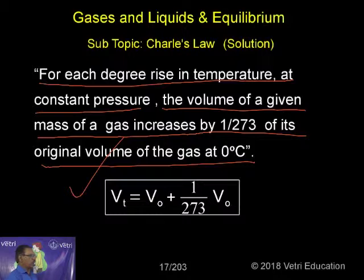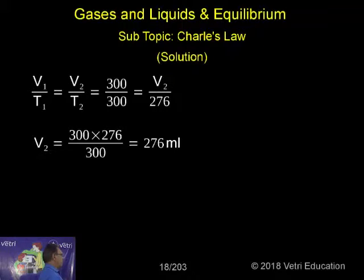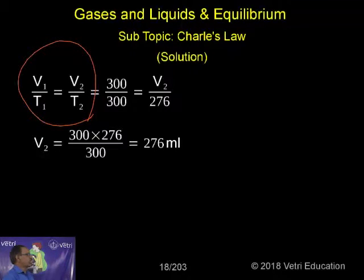Vt equals V0 plus 1/273 V0. I will expand in this form. If I substitute, I can write V1/T1 equals V2/T2 for two different gases.